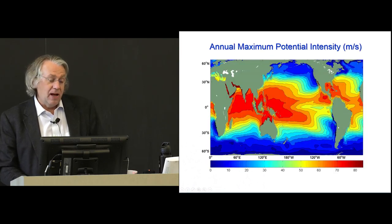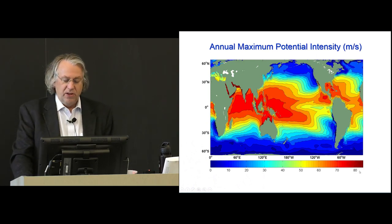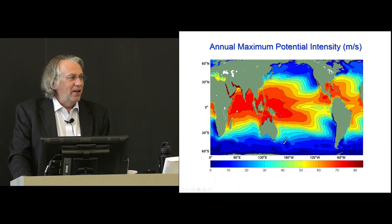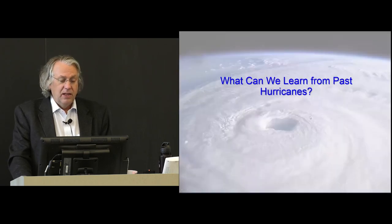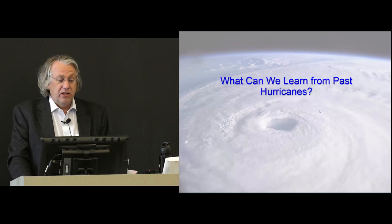This is a map of this theoretical potential intensity calculated in the current climate. This is the maximum over a year that you would find. It's in meters per second. If you want miles per hour, you can basically double that, a little bit more than double it. And you can see that you get very high wind speeds in the tropics. The heat engine doesn't know that it can't work on the equator. But in places like the Caribbean, the Gulf of Mexico, all the places we observe hurricanes.